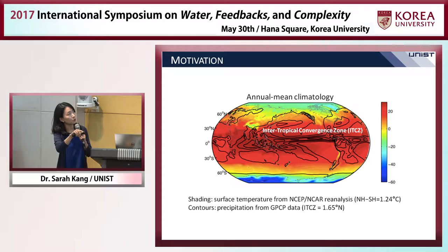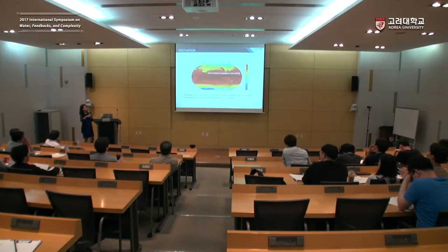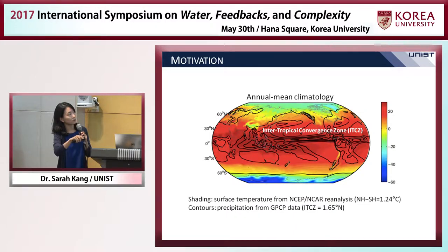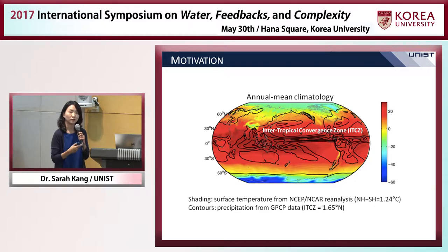Even a small displacement in the ITCZ location can cause dramatic changes in local precipitation. For example, a place that was humid at one point can become completely dry in response to just one degree of ITCZ shift. So it's critically important to understand what controls the ITCZ position.